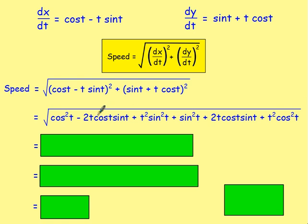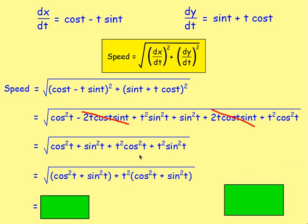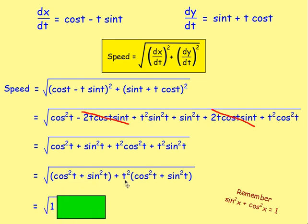The −2t·cos(t)·sin(t) and +2t·cos(t)·sin(t) terms cancel. We're left with cos²(t) + sin²(t) + t²·sin²(t) + t²·cos²(t). Since sin²(t) + cos²(t) = 1, the first two terms equal 1, and the last two factor as t²(cos²(t) + sin²(t)) = t²·1 = t². So the speed equals √(1 + t²).